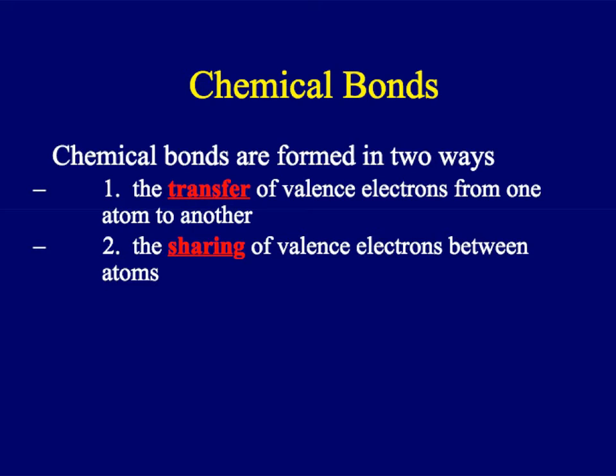In the Lewis dot diagram activity that you did before this section of notes, you should have discovered that bonds are formed in two ways: they're either the transfer of electrons, so giving away electrons or accepting electrons, or the sharing of electrons. In this unit, we're going to look at why some elements give away their electrons while others accept, and why some share.